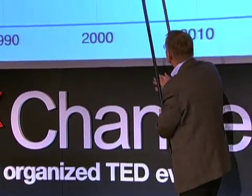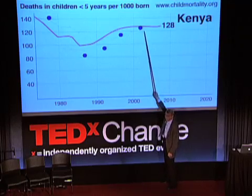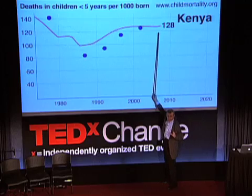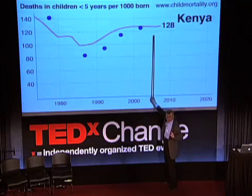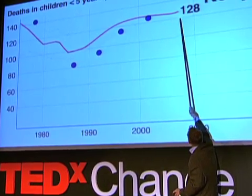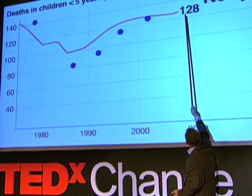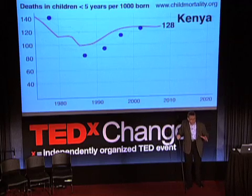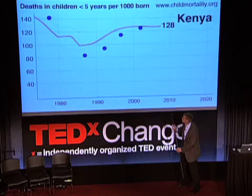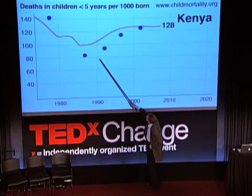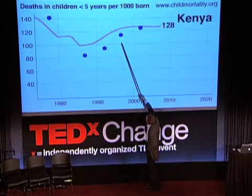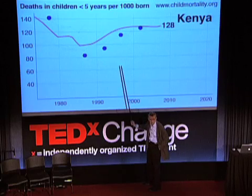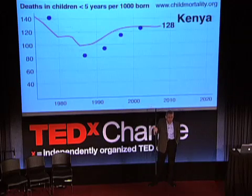But watch out — they continue the line beyond the last data point, out into nothing. They estimated that in 2008, Kenya had a child mortality of 128. And I was sad, because we could see this reversal in Kenya with increased child mortality in the 1990s. It was so tragic.